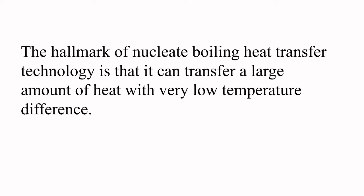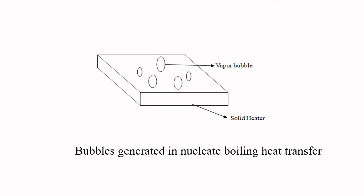The hallmark of nucleate boiling heat transfer technology is that it can transfer a large amount of heat with a very low temperature difference. Here it shows bubbles generated in nucleate boiling heat transfer. Here is a vapor bubble, and this one is a solid heater. When the solid heater works, many vapor bubbles are formed on the surface of the solid heater.